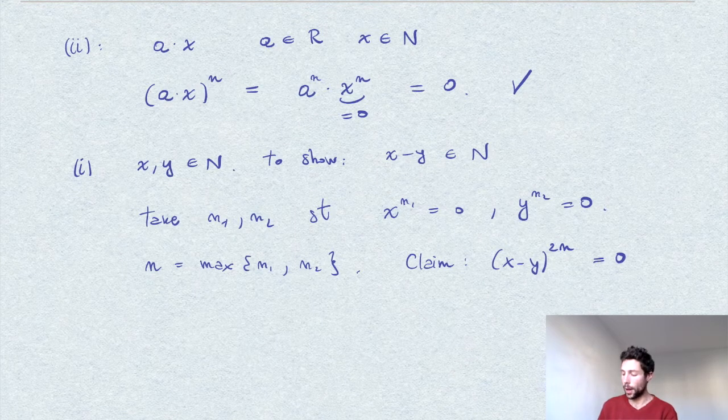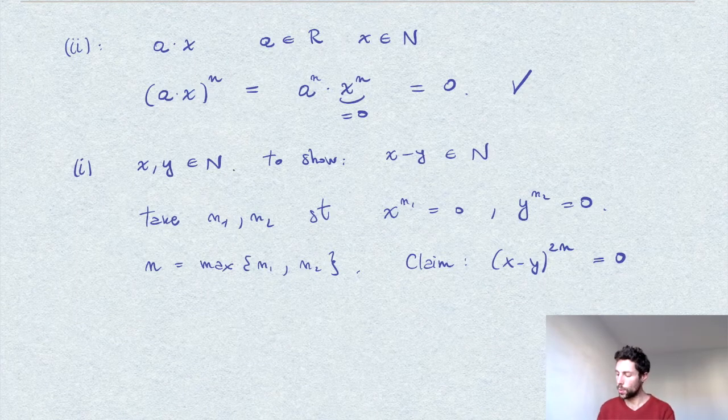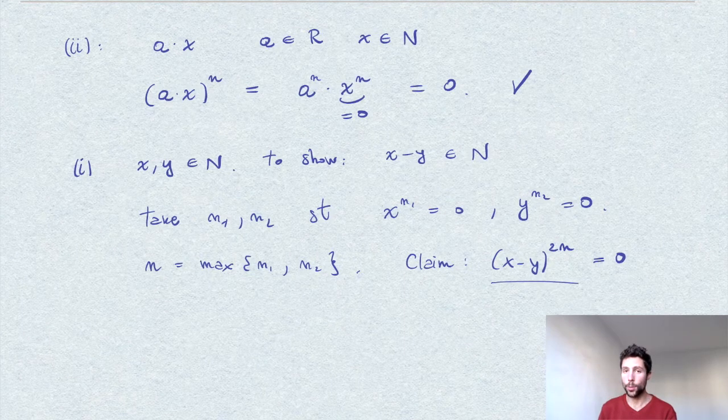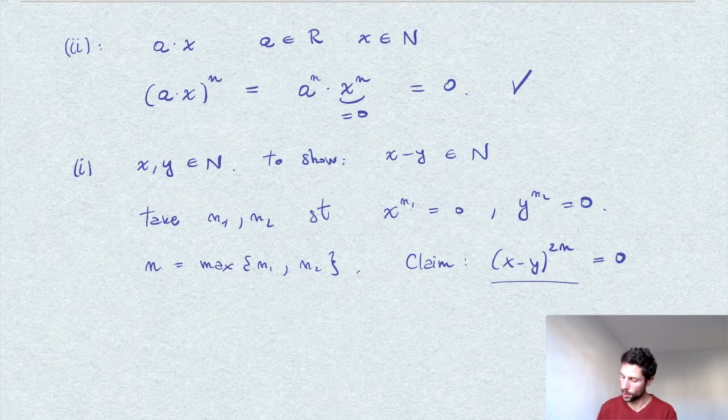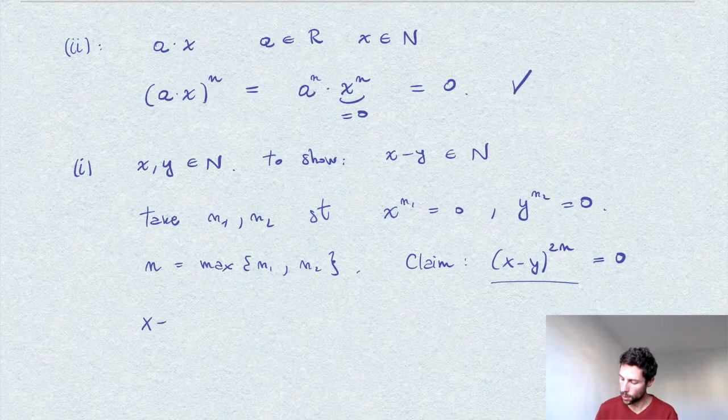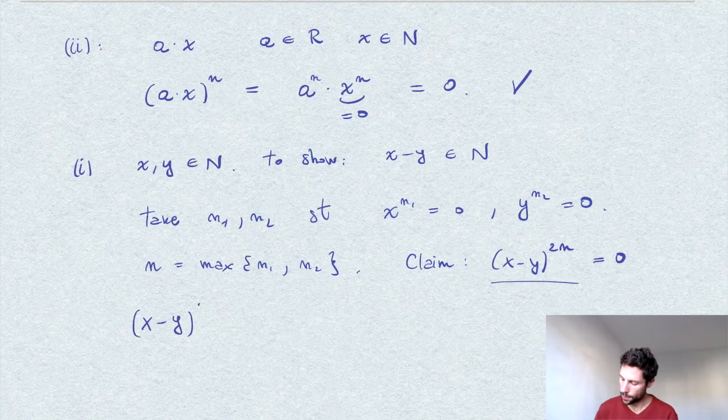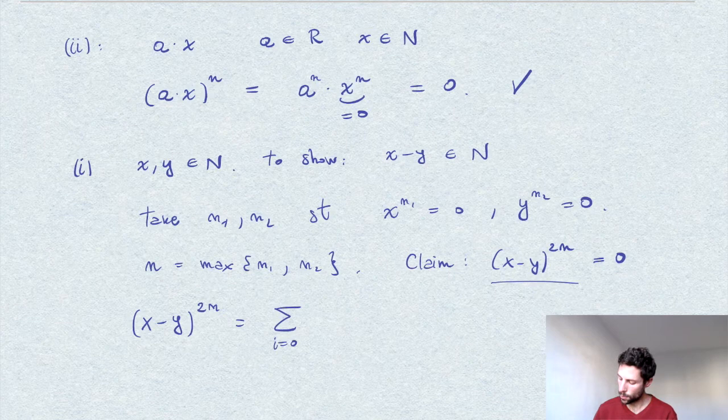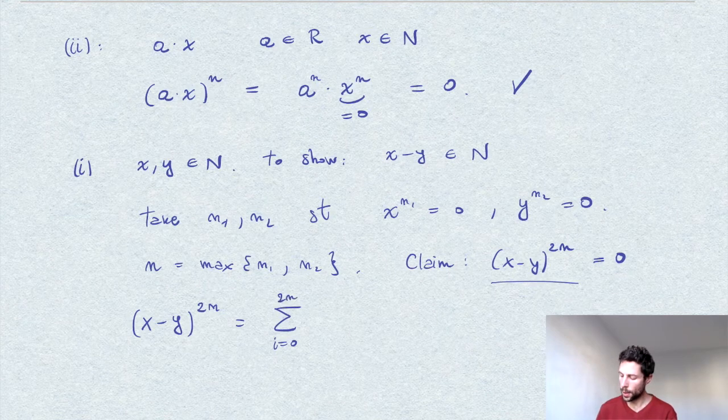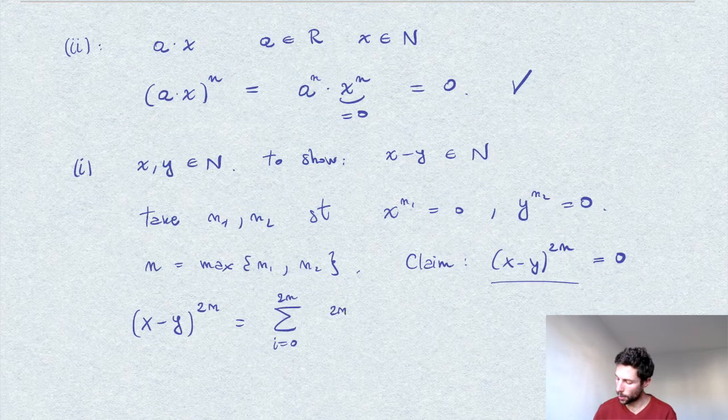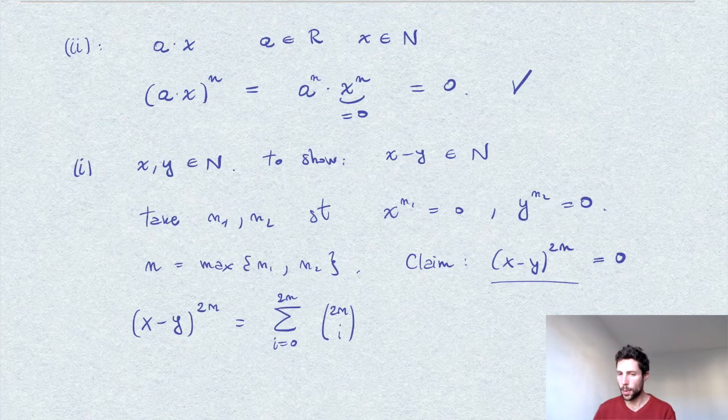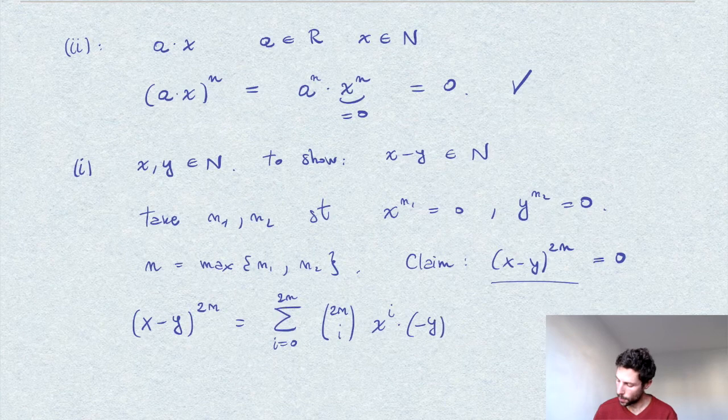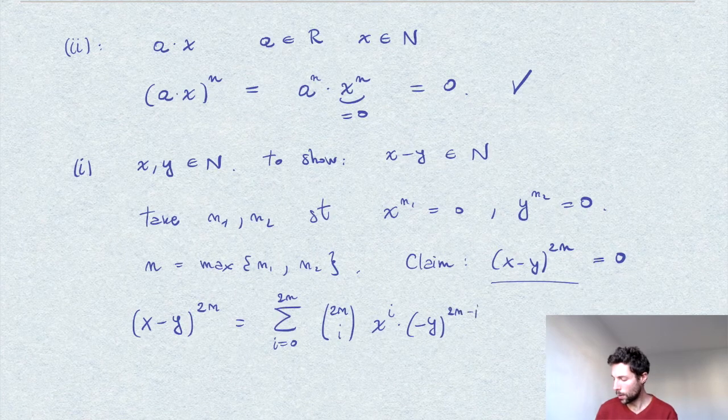If the ring were not commutative, I wouldn't be sure how to expand this power, but in the commutative case we have the binomial expression. Because R is commutative, we can write this with the binomial formula: the sum from i equals 0 to 2n of (2n choose i) times x to the i times (minus y) to the power (2n minus i).